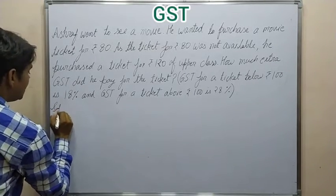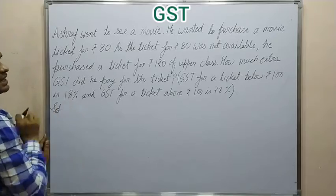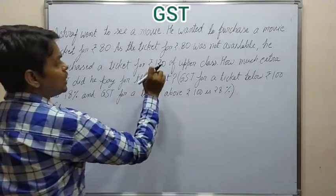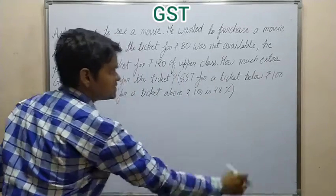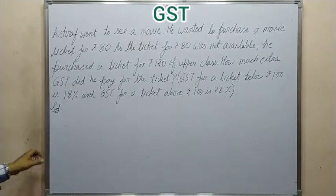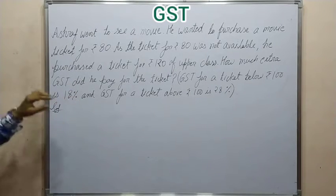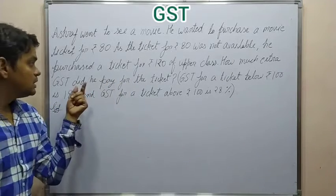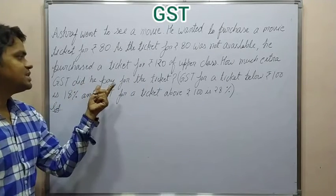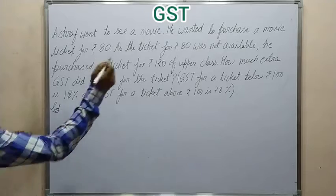So friends, the simple approach is: we calculate GST on Rs. 80 at 18%, and GST on Rs. 120 at 28%. The difference of these two GST amounts is the extra GST paid by Ashraf — that is our answer.